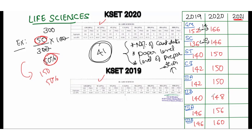According to the 2019 and 2020 data, the expected cutoff for life sciences 2021 is as follows. For general merit, around 170 to 180 is the safest marks range. For SC category, around 150 to 155 is the safest marks. For ST, around 152 to 160 is the safest marks.